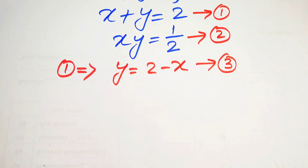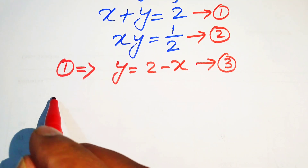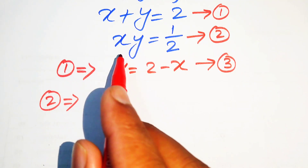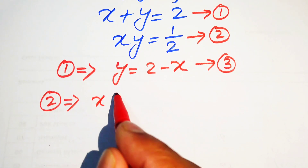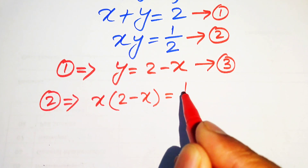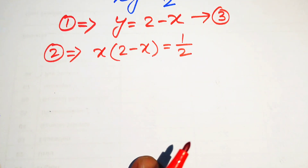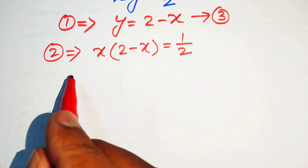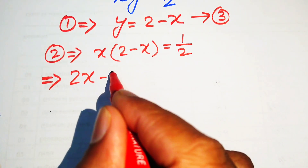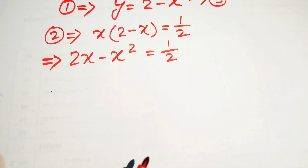In the next step we substitute the value of y into equation number 2. Equation number 2 becomes x times (2 minus x) equals 1 over 2. We multiply x on both terms to get 2x minus x squared equals 1 over 2.